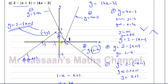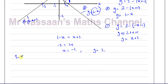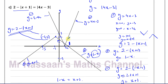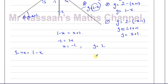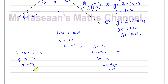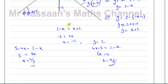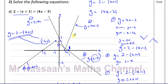From the sketch we can see both intersections involve the branch y = 1-x. The first solution comes from 3-4x = 1-x: rearranging gives 2 = 3x, so x = 2/3. The second solution comes from 4x-3 = 1-x: rearranging gives 5x = 4, so x = 4/5. Both solutions are positive and less than 1, consistent with the sketch.